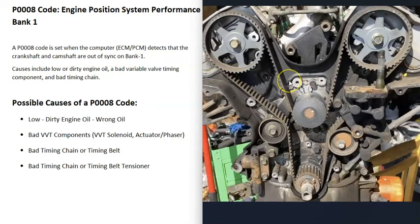There are also going to be timing belt or timing chain tensioners, which basically hold everything tight. If there's some kind of issue with that tensioner and it's not holding everything tight, then that can also throw everything off. So the last thing on the list is going to be a bad timing belt, timing chain, or timing chain tensioner.